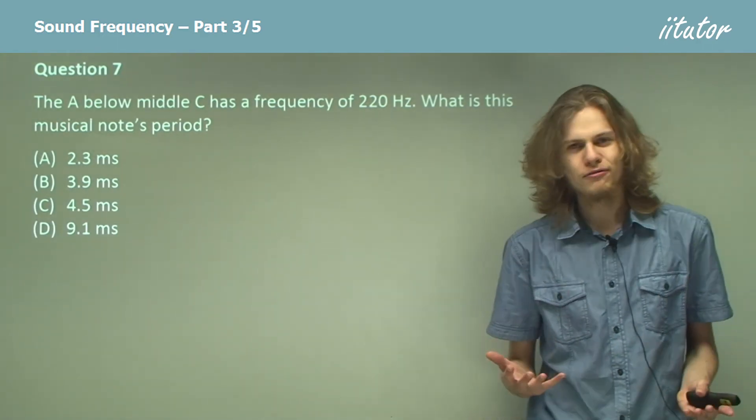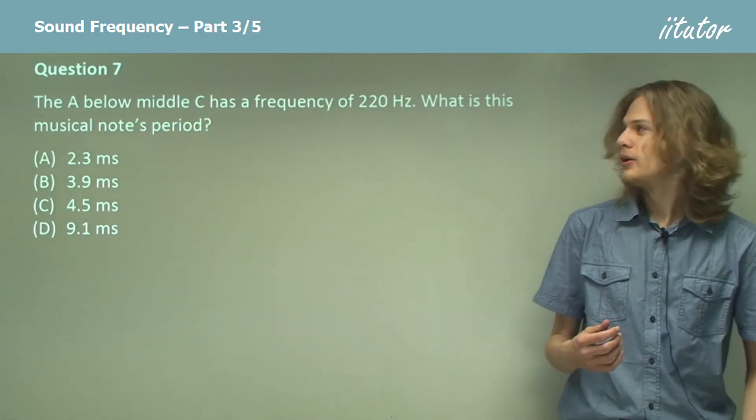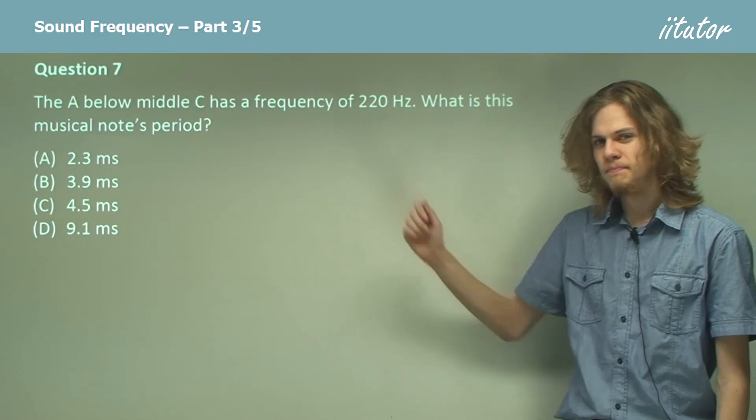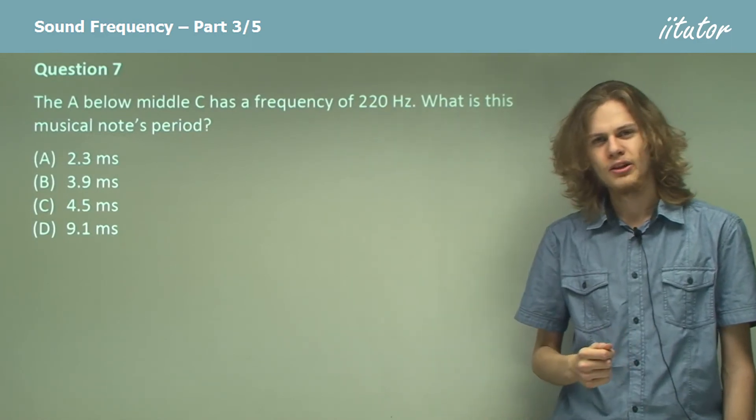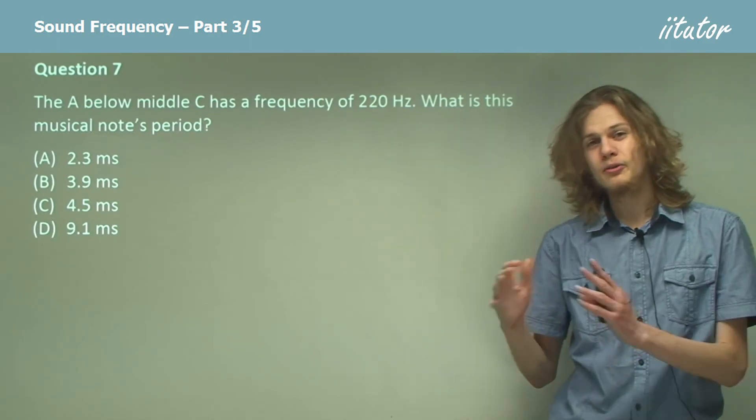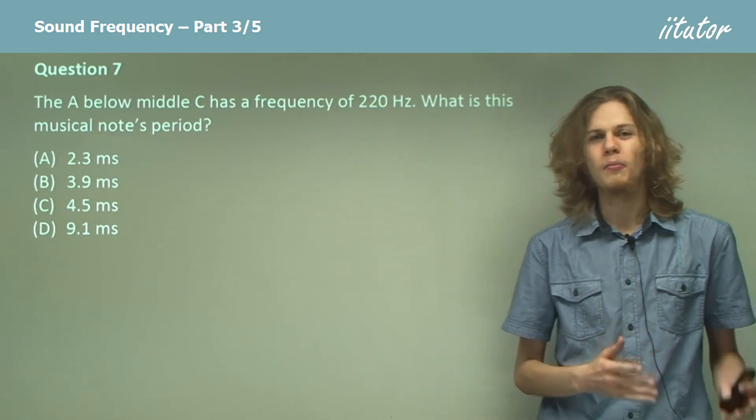Now, if we have a wave of any sort, sound wave or not, we can find its period if we know its frequency. So what's the formula again? That's right, the period equals 1 divided by the frequency.